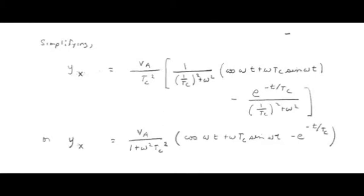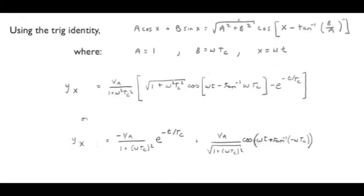In any case, we end up here with what might be considered an intermediate result for Y of X at the bottom of this slide. The expression has all the right variables, omega, T sub C, V sub A. But with that combination of a cosine term, a sine term, and an exponential term, it doesn't exactly readily lend itself to a picture in one's mind. So let's use some trig identities to simplify this a little farther.